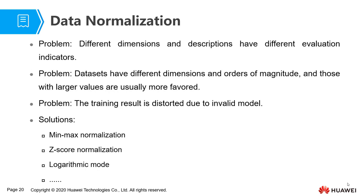We use data cleaning methods to fill missing values and make sure there are no outliers. Next, we will move to data normalization. Why is data normalization necessary? Different evaluation dimensions are based on different evaluation indicators — in other words, data has different orders of magnitude for different dimensions. Some dimensions have larger numeric values, which may affect the training model, because data with large numeric values may be of little importance. Therefore, if data is not under the same dimension, the model training may be meaningless. Generally, min-max, z-score, and logarithmic normalization methods are used.